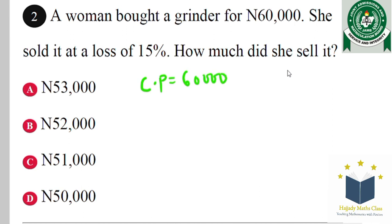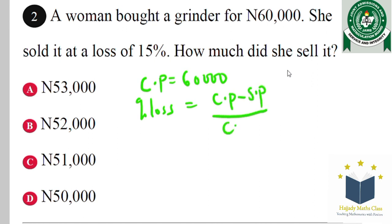Don't forget, the formula for percentage loss is: cost price minus the selling price, over the cost price, multiplied by 100. Since it is percentage loss, not percentage profit — if it were percentage profit, it would have been selling price minus cost price.